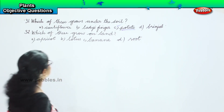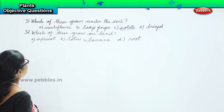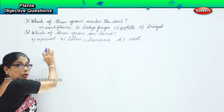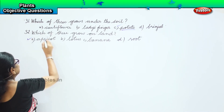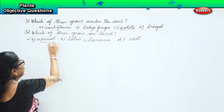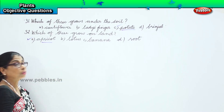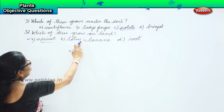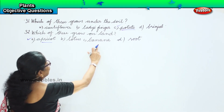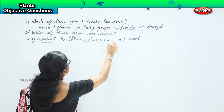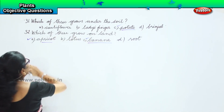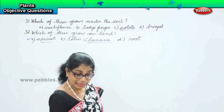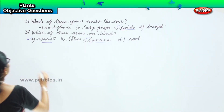You are given four options. Which of these grow on land? Apricot grows on land — yes, Option A. Lotus — no, lotus grows in water. Root is under the soil. Banana — yes. Both banana and apricot grow on land.